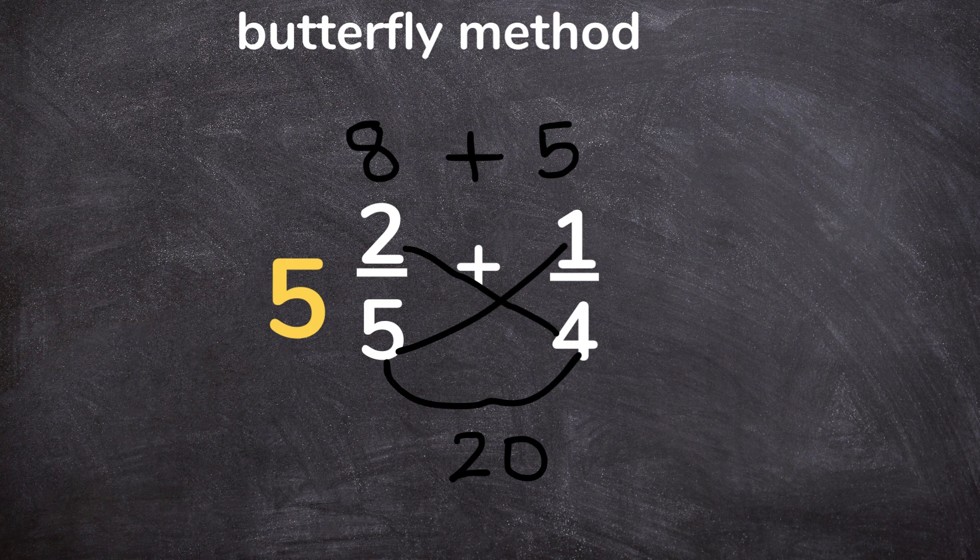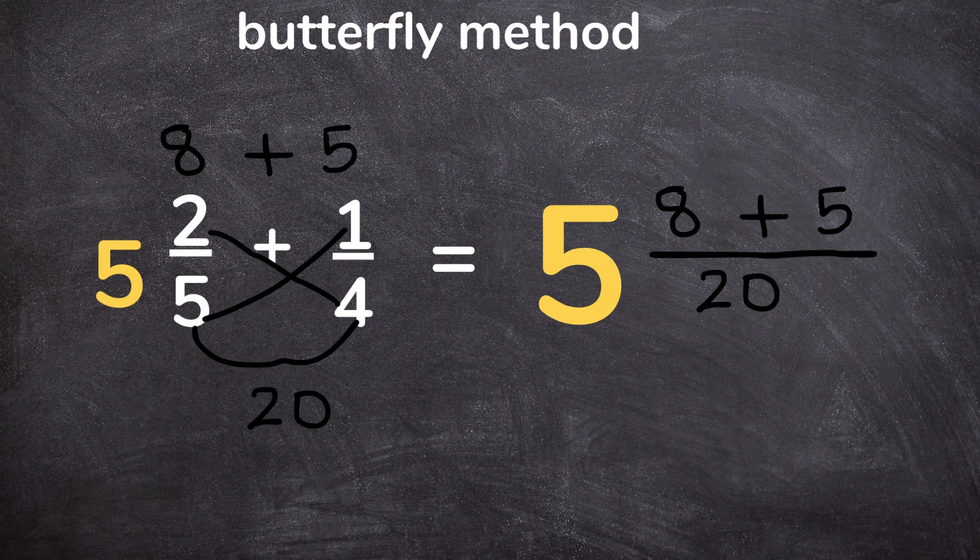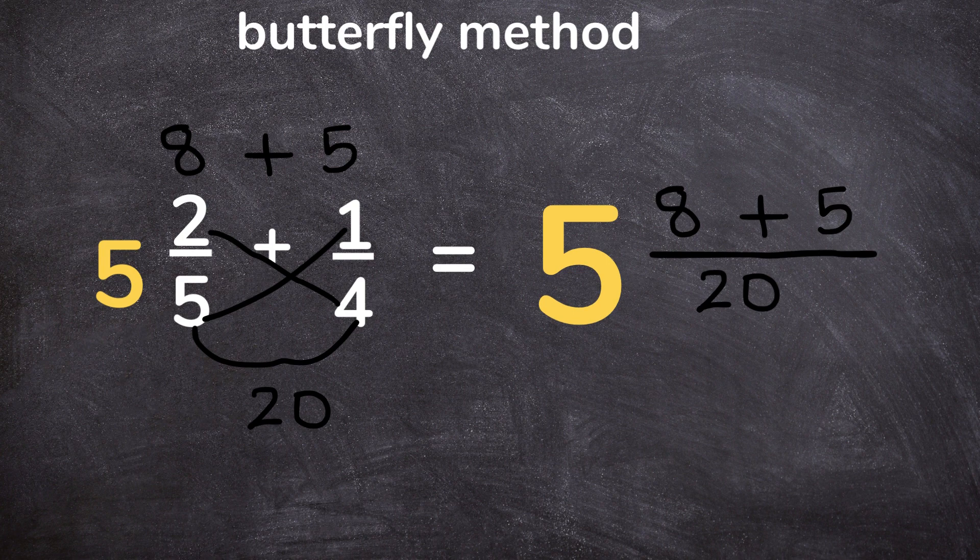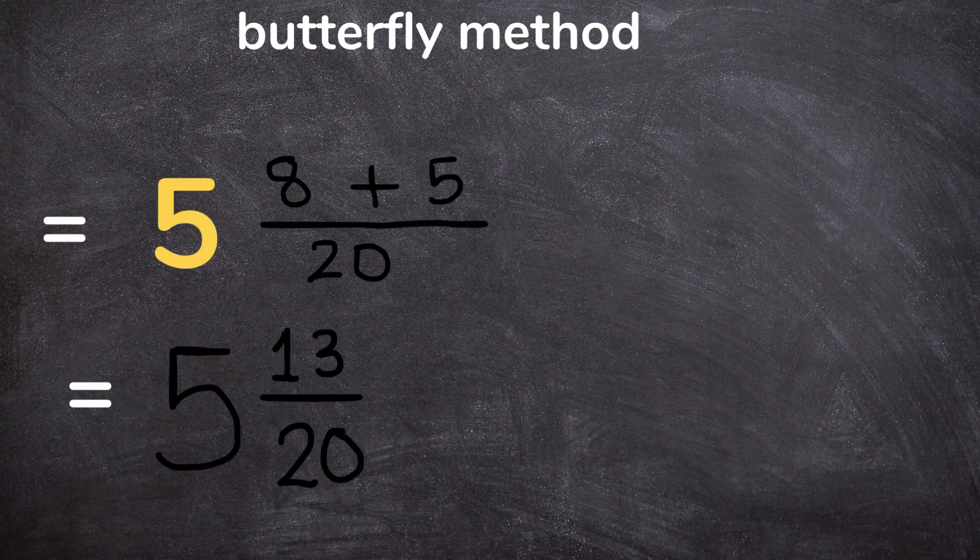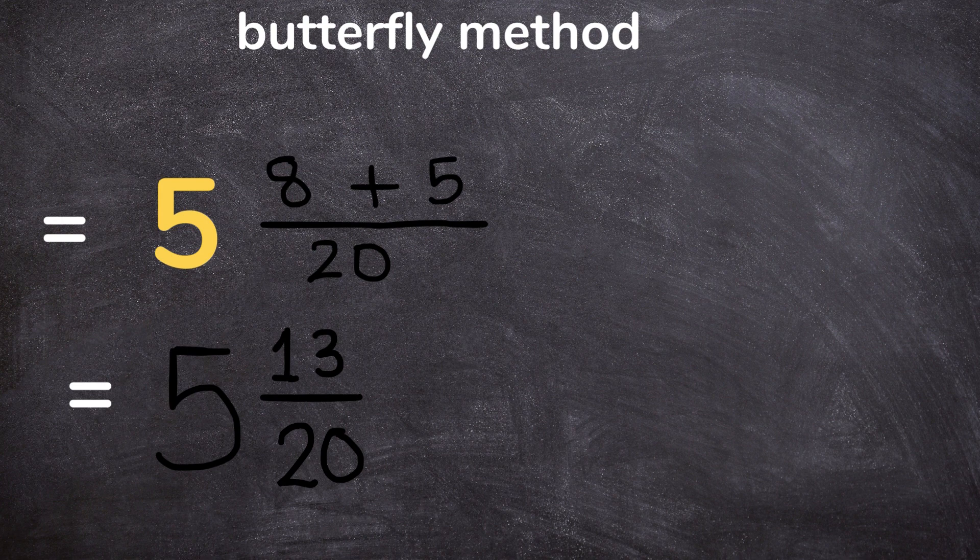So now we end up having 5 as a whole number and 8 plus 5 on our numerator, all over 20 as our denominator. So you will take the 5 and add the numerators together, 8 plus 5.